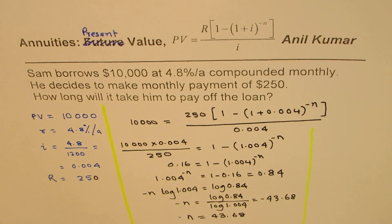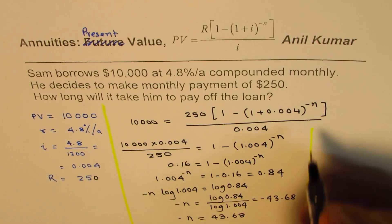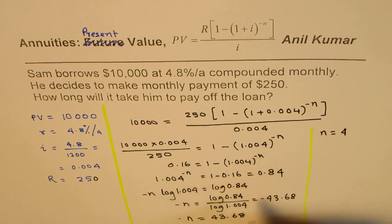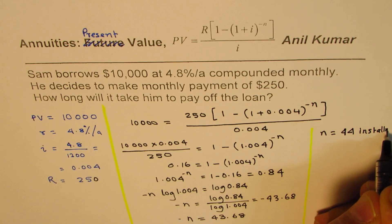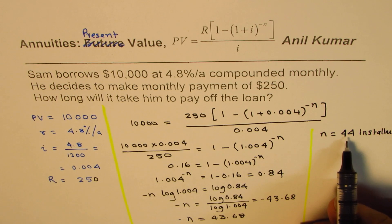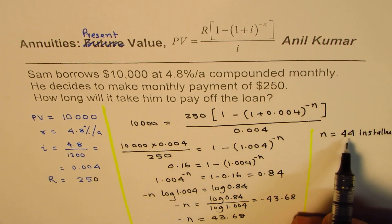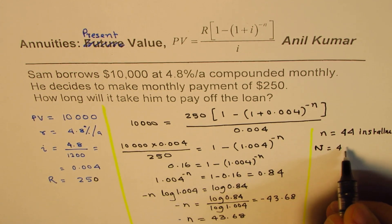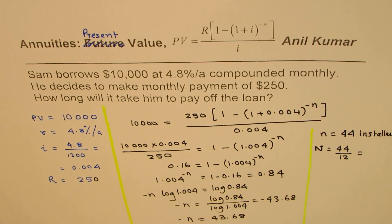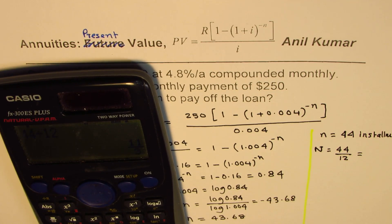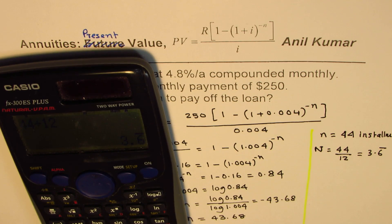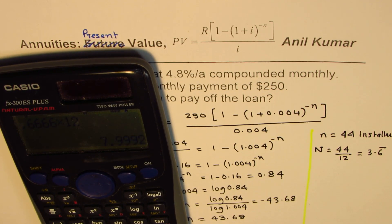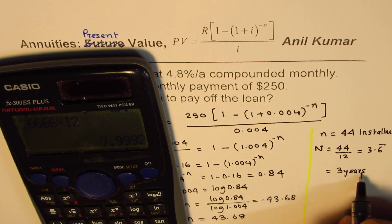From here, n equals 43.68. These are the number of monthly installments. We round 43.68 up to 44 installments. Since this is compounded monthly, we divide by 12 to get the number of years: 44 divided by 12 is 3.6 recurring — that is three years and some months. Multiplying 0.666 by 12 gives approximately eight months. So that is three years and eight months.